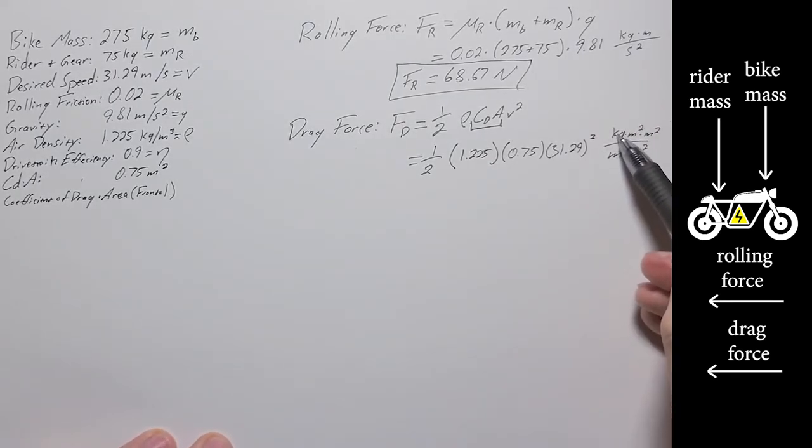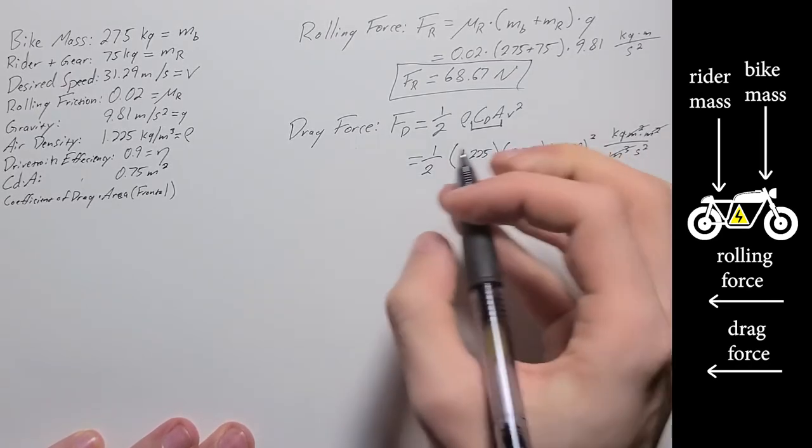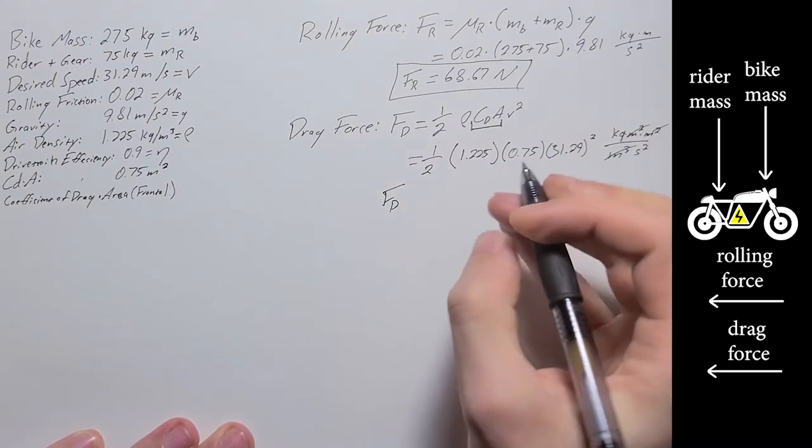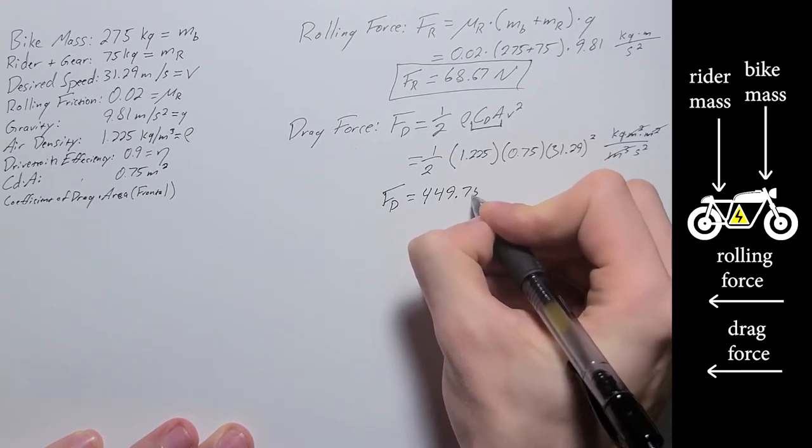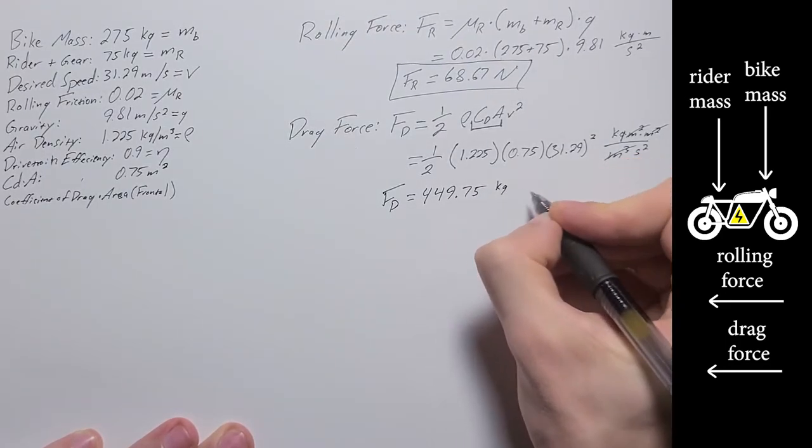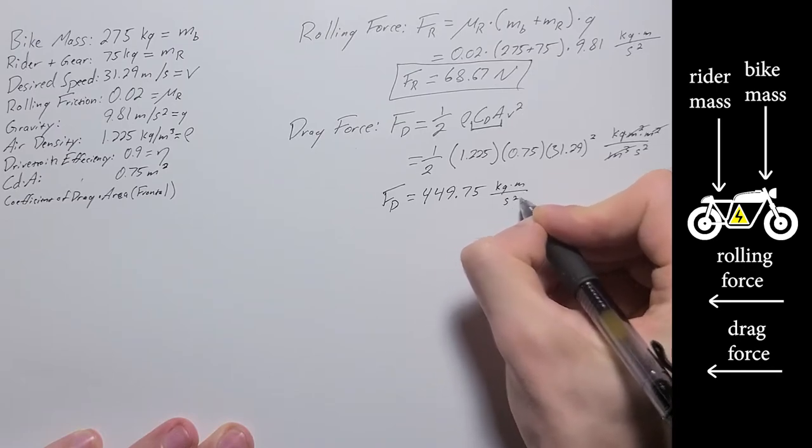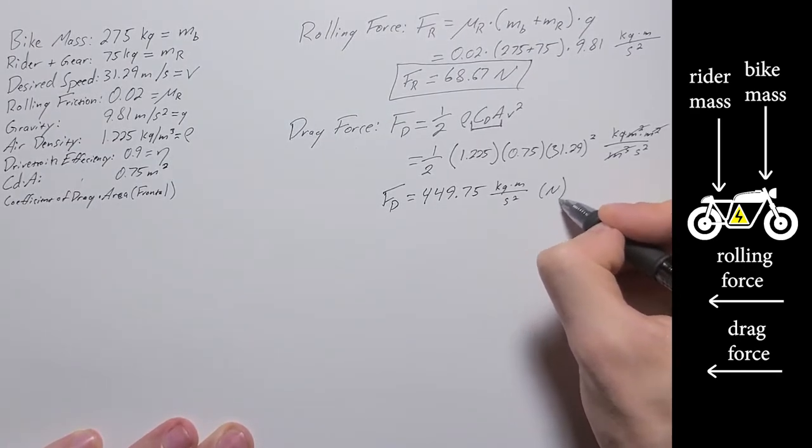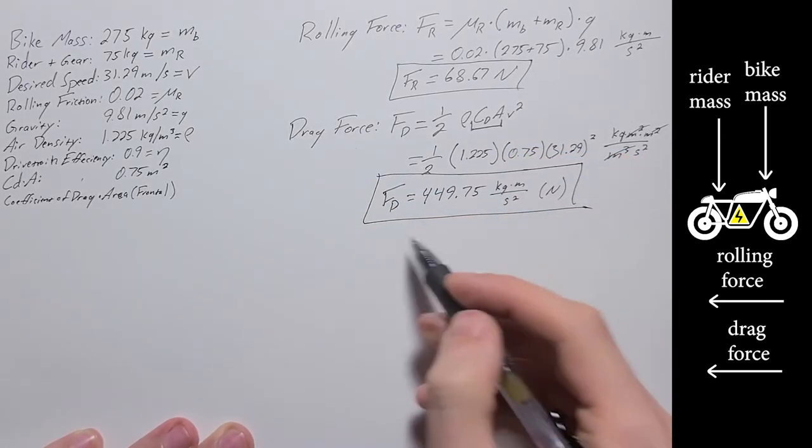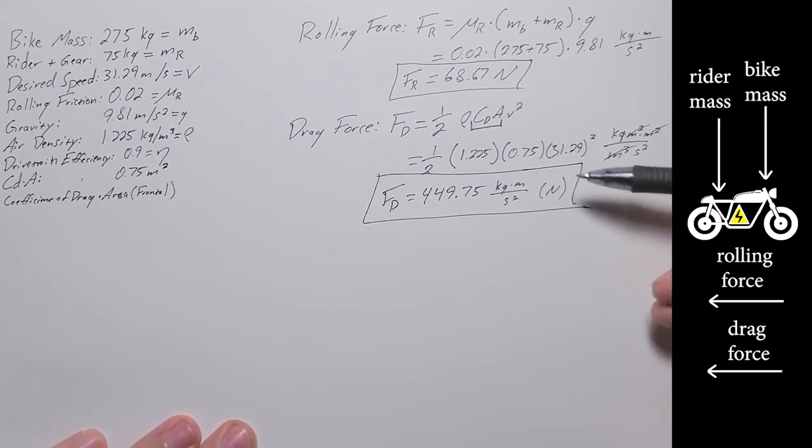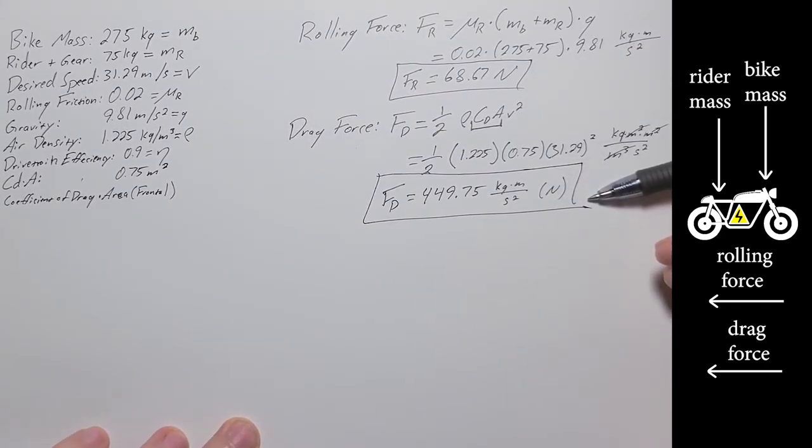So we've got kilogram stays there, meters cancels out. So that comes down to our final drag force of 449.75 kilogram meter per second squared, or newtons. So units check out.